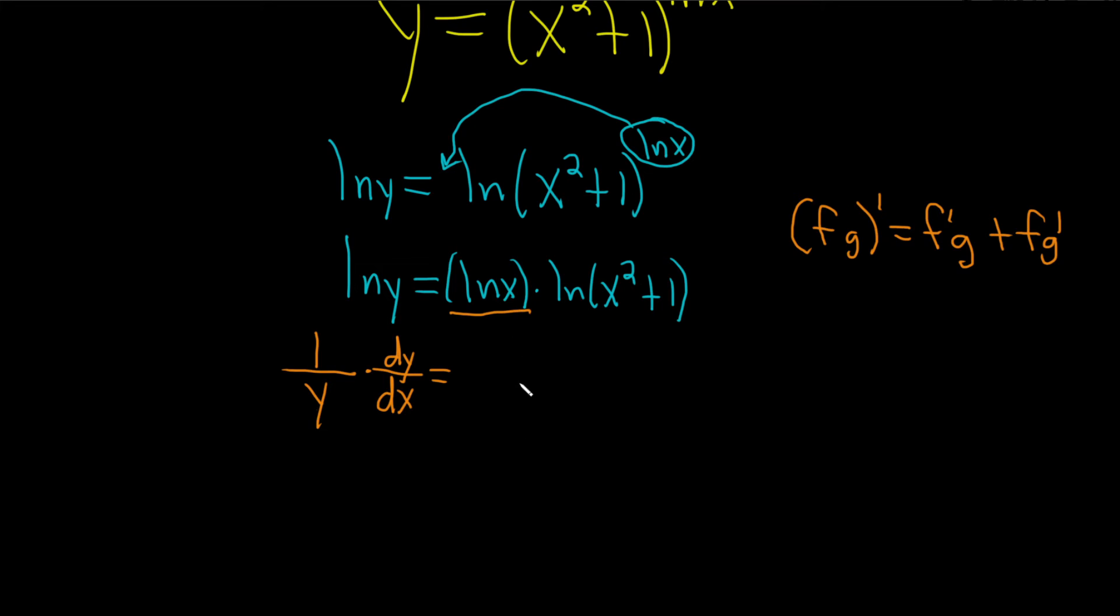So here, our first function is the natural log of x, and our second function is this one. So the derivative of ln x is 1 over x, that's the derivative of the first, times the second. So ln of x squared plus 1, plus the first, so ln of x, times the derivative of the second. So it's ln of x squared plus 1, so it's 1 over whatever you see there, and then times the derivative of the inside, so 2x, chain rule.